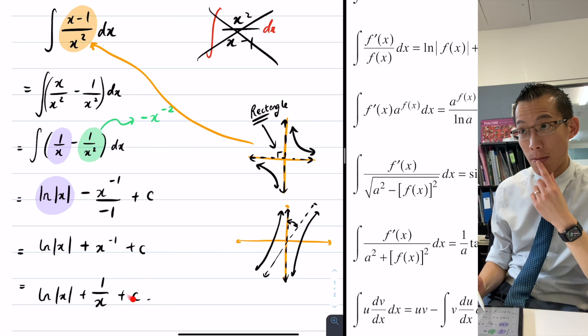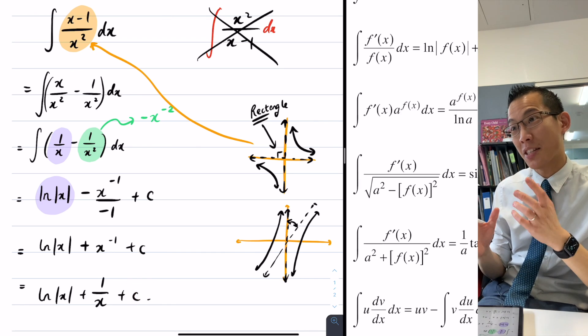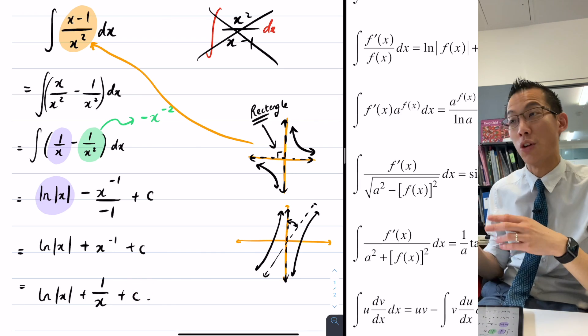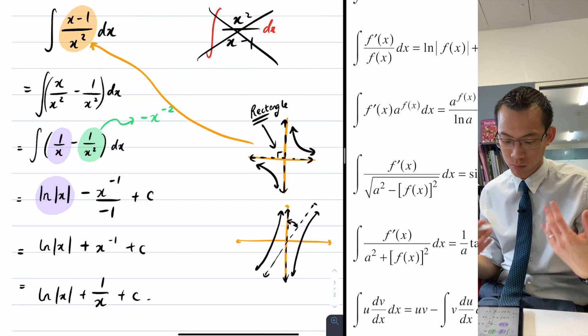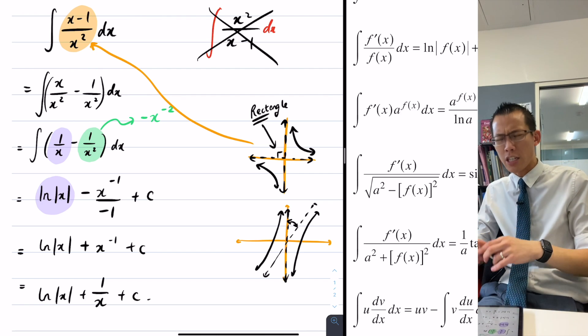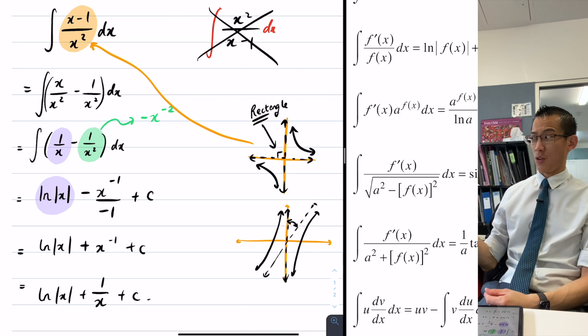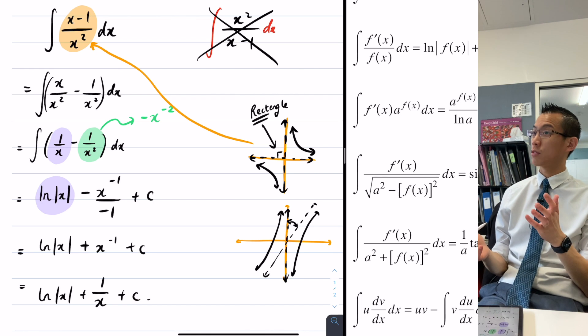But the problem with going up another step here is because of this guy here, because of this constant. So this constant mucks about with things and it will change what you get on the next step. So that's why, if we were asked to go further, they would need to provide us with extra information so we could find out what that plus c is actually equal to.